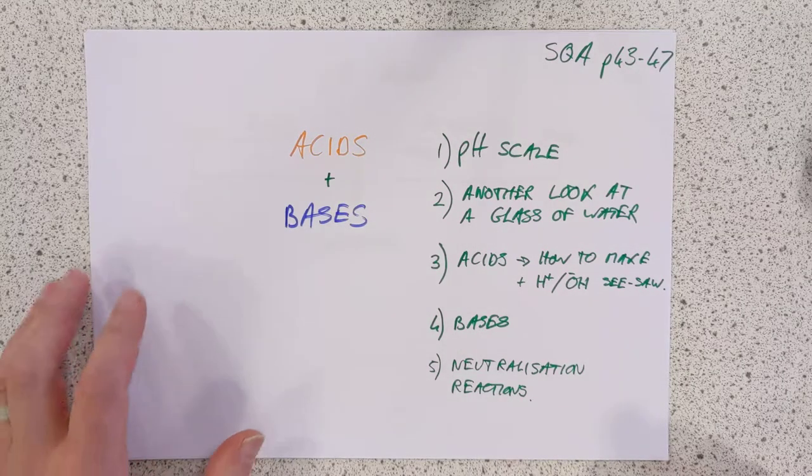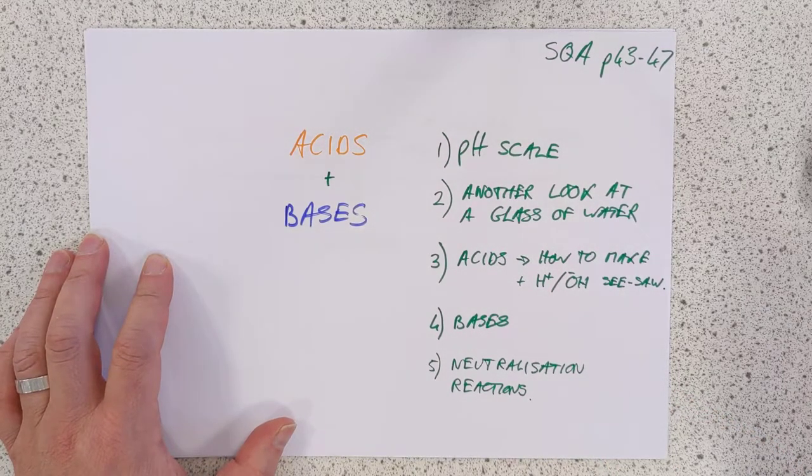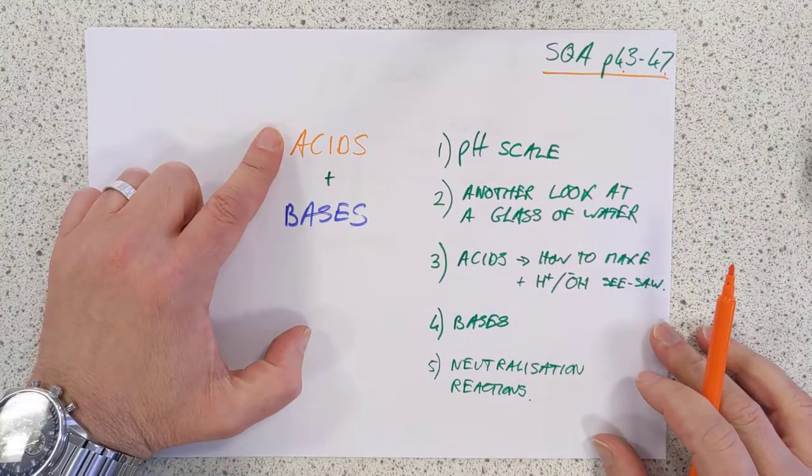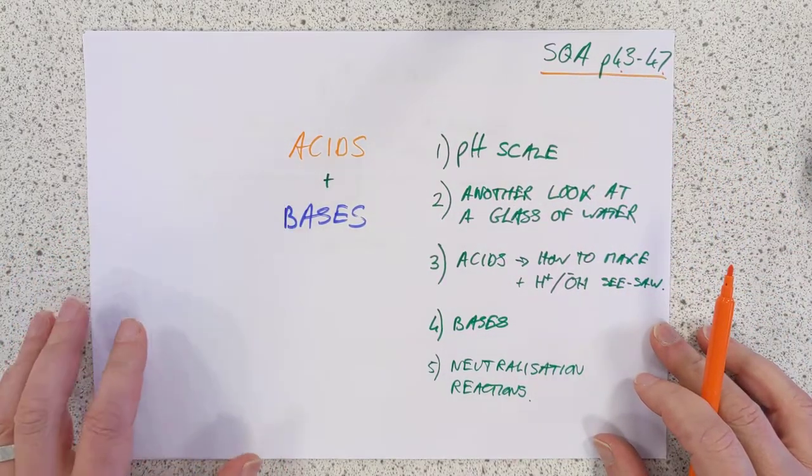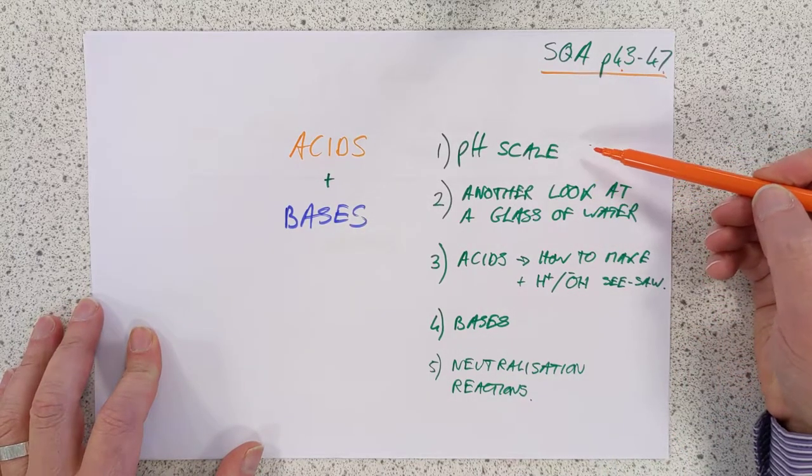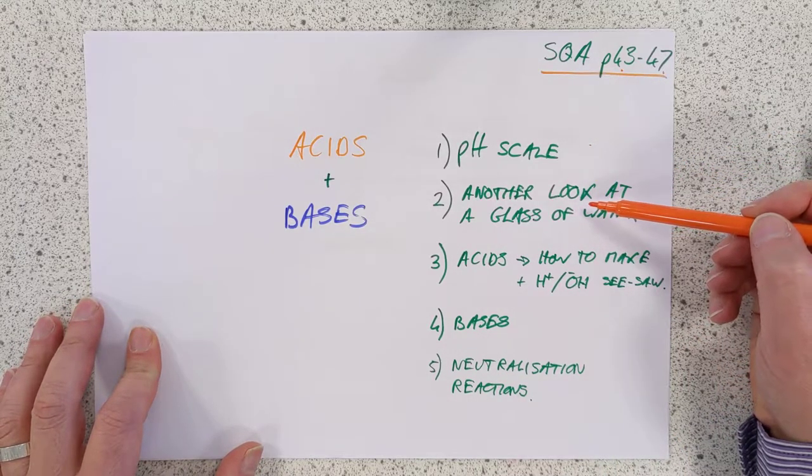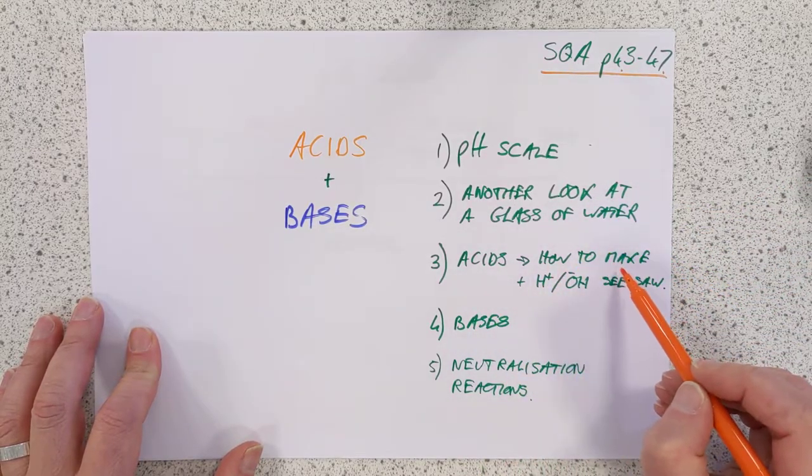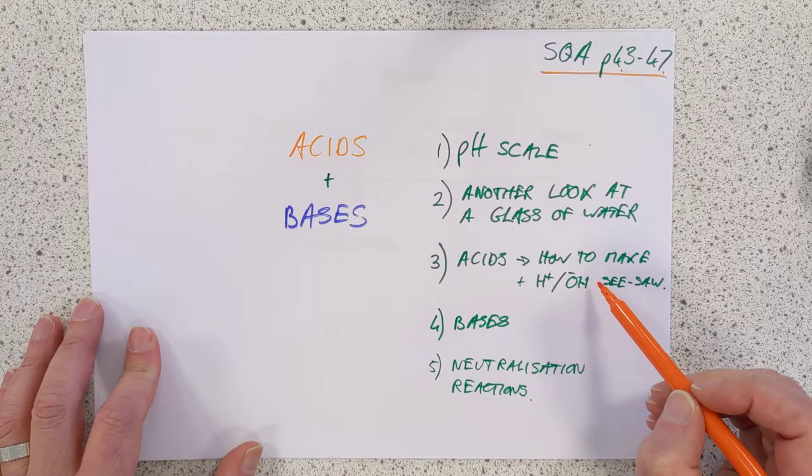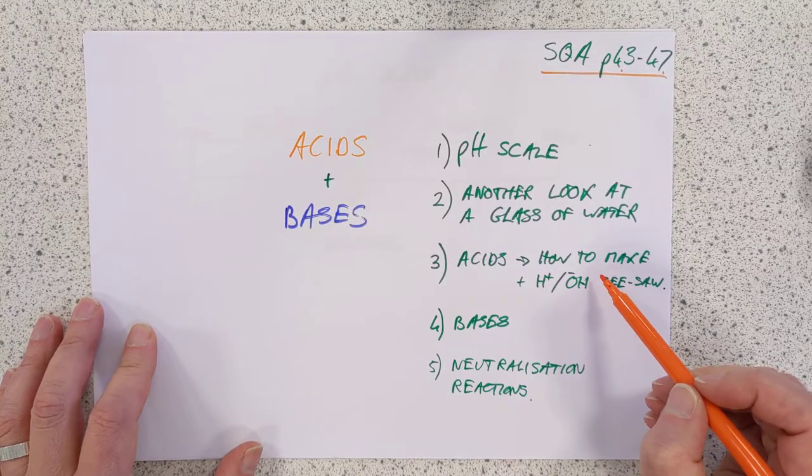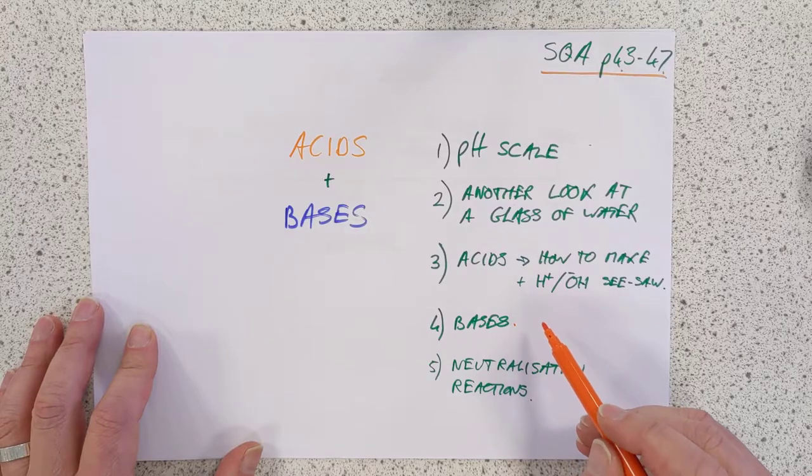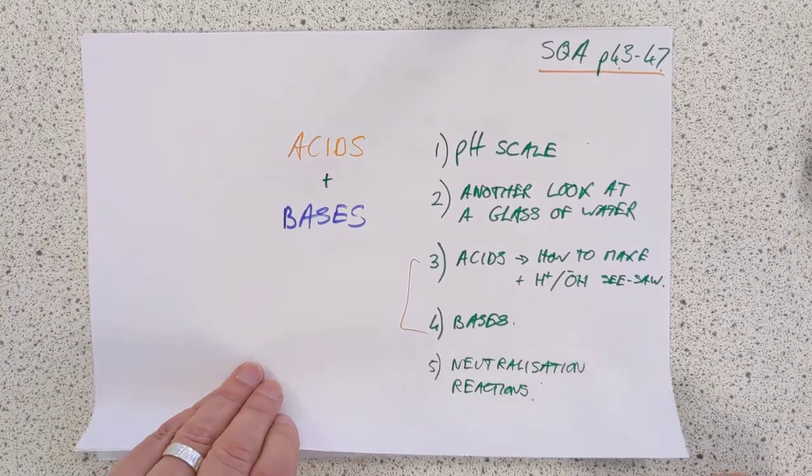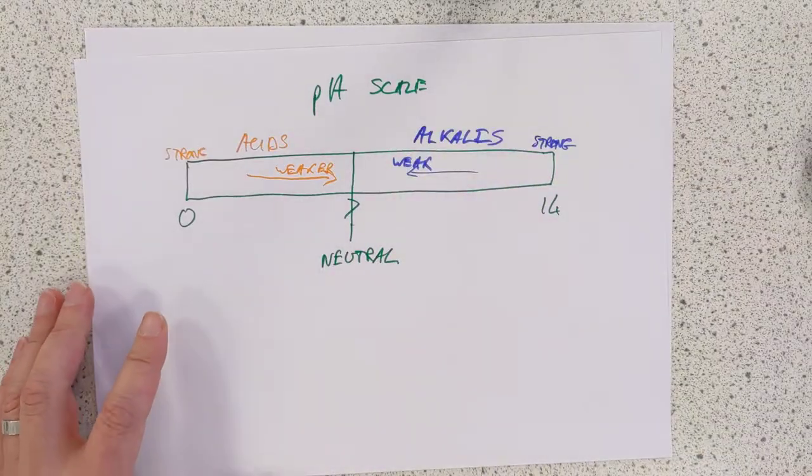Good morning folks, welcome back to National 5 Chemistry. Today we're going to have a look at SQA pages 43 through to 47. That is the content of acids and bases. These are the learning outcomes I'd like to tackle today. pH scale, we're going to have a closer look at the weirdness that water is. We're going to have a look at an acid, how to make an acid from scratch, and what the SQA wants you to know about the nature of acids. We're going to have a look at bases, there are four categories of base, and we'll have a look at the neutralization reactions between acids and bases.